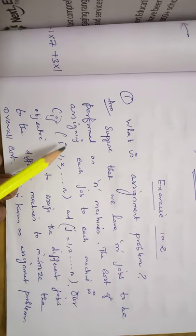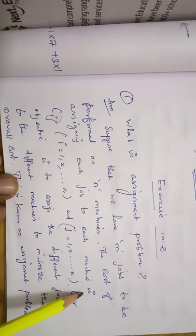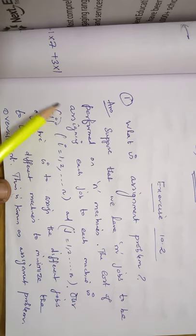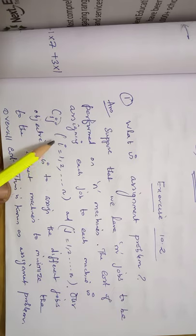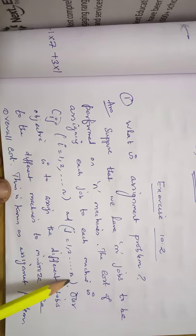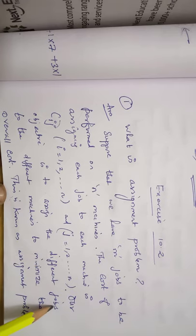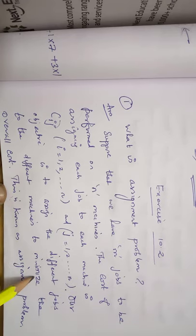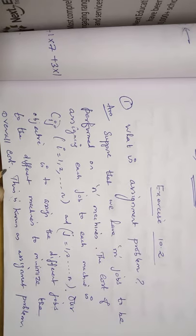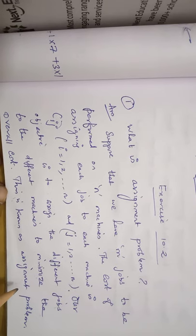The cost of assigning each of the jobs to each machine is C_ij, where C_ij means the cost matrix. Here i varies from 1 to n and j varies from 1 to n, so these two values are the same. Our objective is to assign the different jobs to different machines to minimize the overall cost. This is known as the assignment problem.